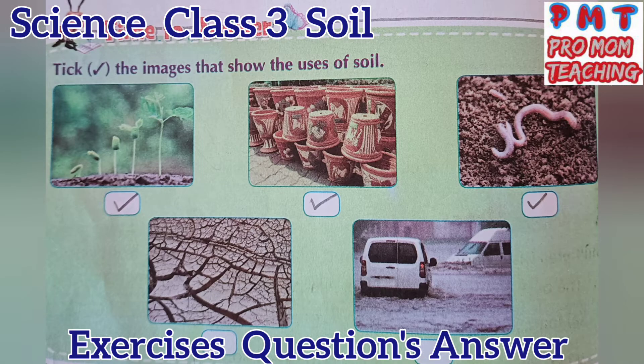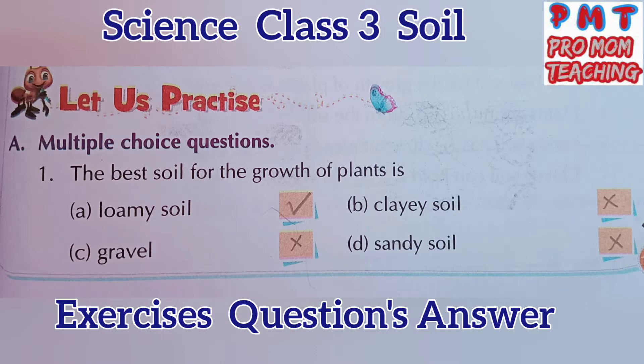Next: loamy soil contains humus. It is found in gardens and farmland and is the perfect soil for growing plants. Tick the images that show the uses of soil. Tick first — plants grow in soil. Next tick — clayey soil is used for making pots and toys. Tick next — many small animals make their homes in soil.